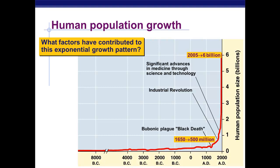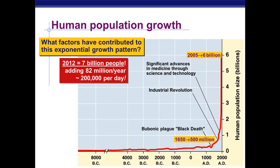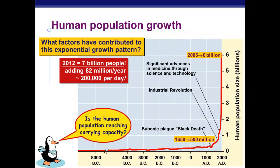In 2005 we had 6 billion people. In 2012 we hit 7 billion, and we're growing at about 200,000 people per day. This makes us wonder if we're reaching carrying capacity, and some people worry we might accidentally pass it and face starvation and die-offs.